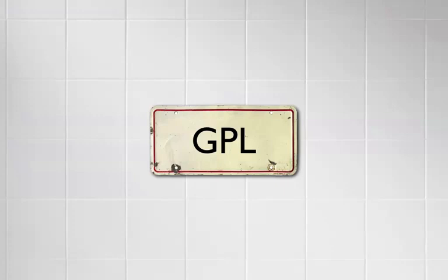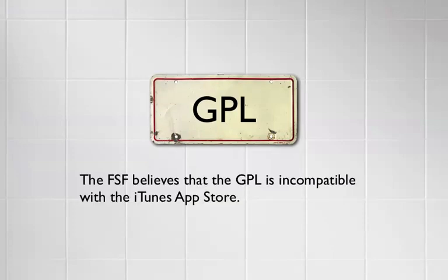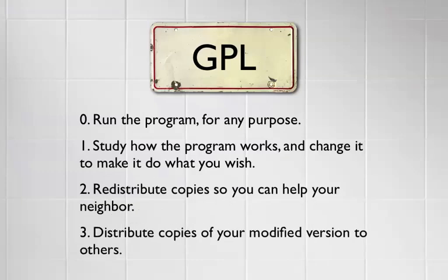The GPL is produced by the Free Software Foundation and basically encapsulates the ideas put forward by Richard Stallman when he wrote the Free Software Manifesto. Being written by the Free Software Foundation means they have an opinion about it when it comes to things like the App Store — and that's that the Free Software Foundation believes that the GPL is fundamentally incompatible with it. It might be instructive to investigate why.